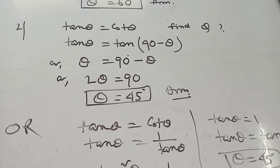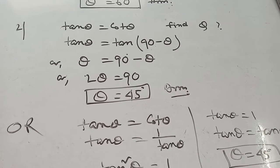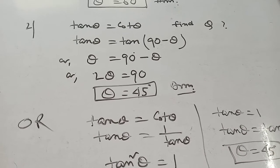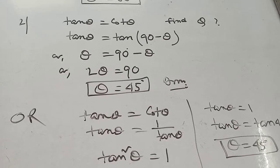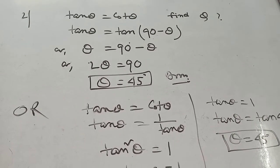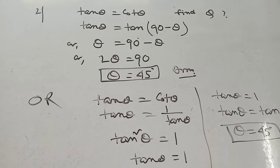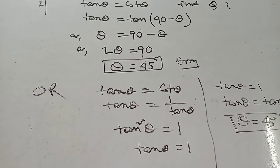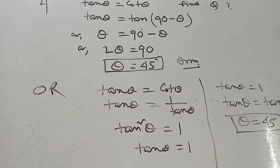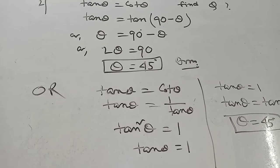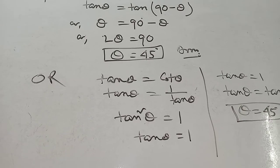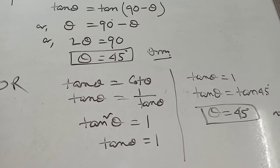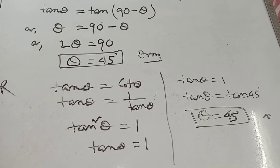Another way you can also change the Tan Theta. Tan Theta equal to Cot Theta means Tan Theta equal to 1 by Tan. Tan squared Theta equal to 1. Tan Theta equal to 1. Tan Theta equal to Tan 45. Theta equal to 45.